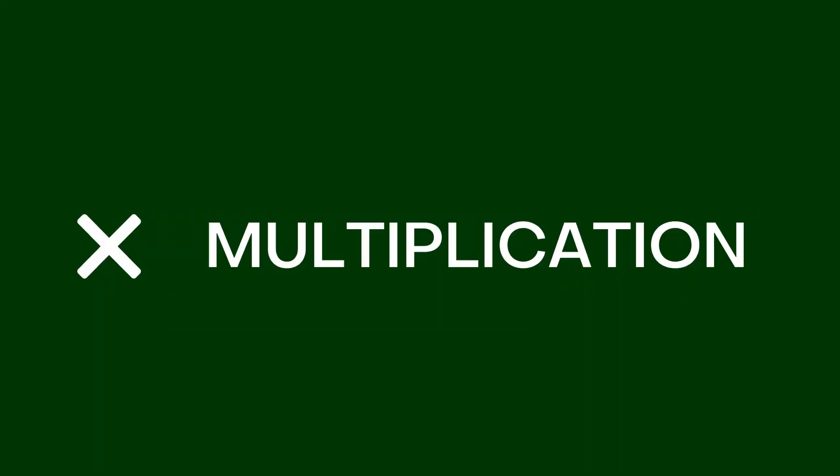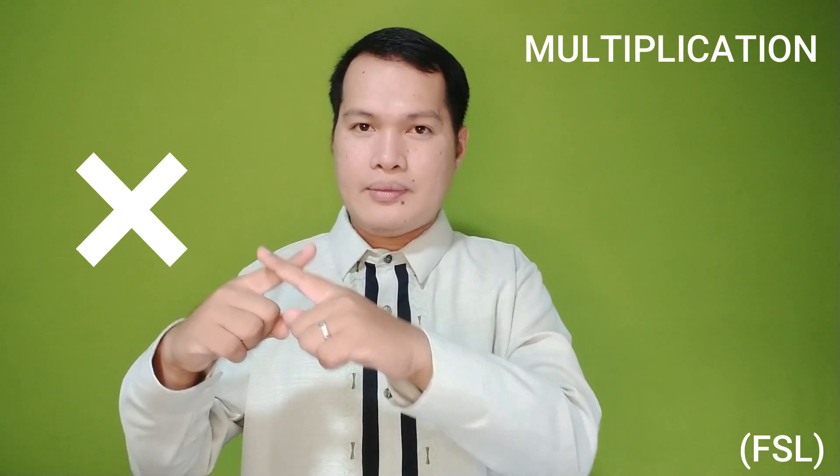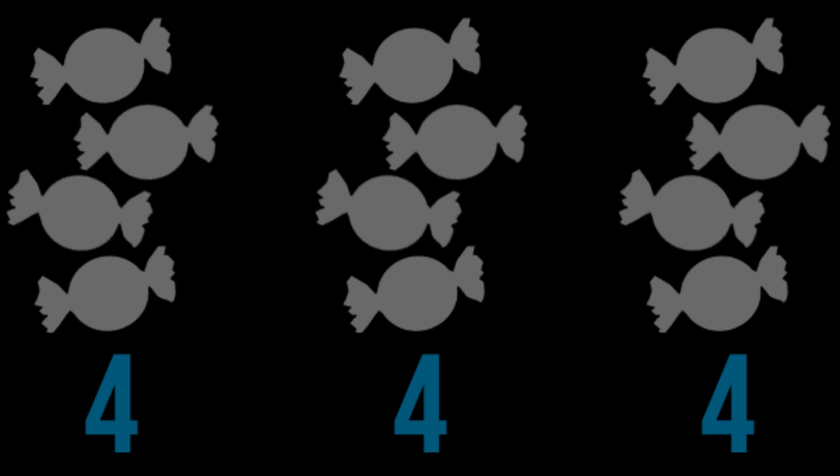Multiplication uses the saltire sign to denote multiplication or times. In ASL, we use both hands to sign the 'X' shape and move across once. For example, 3 saltire 2, or 3 X cross 2.